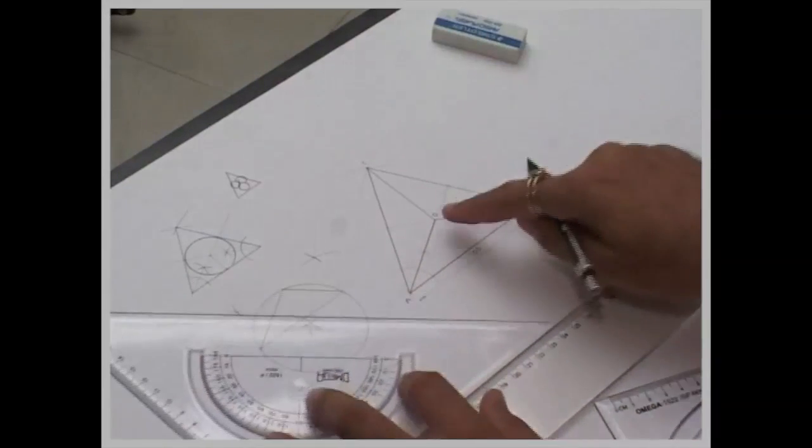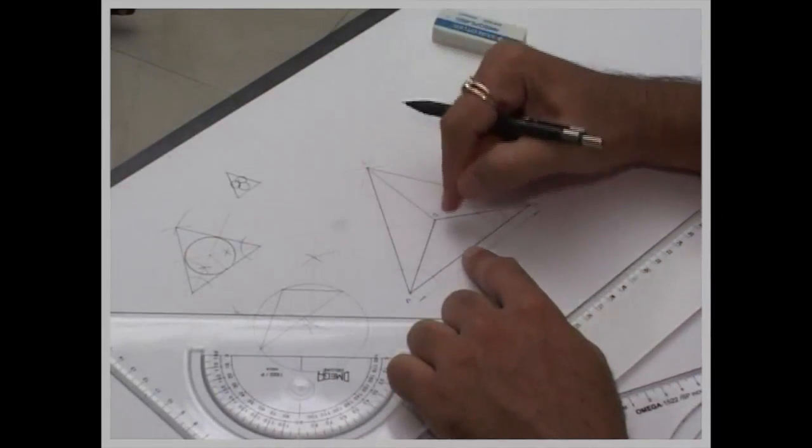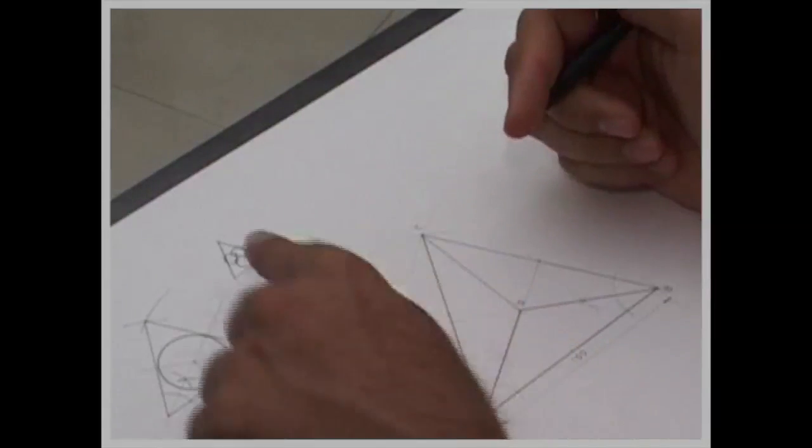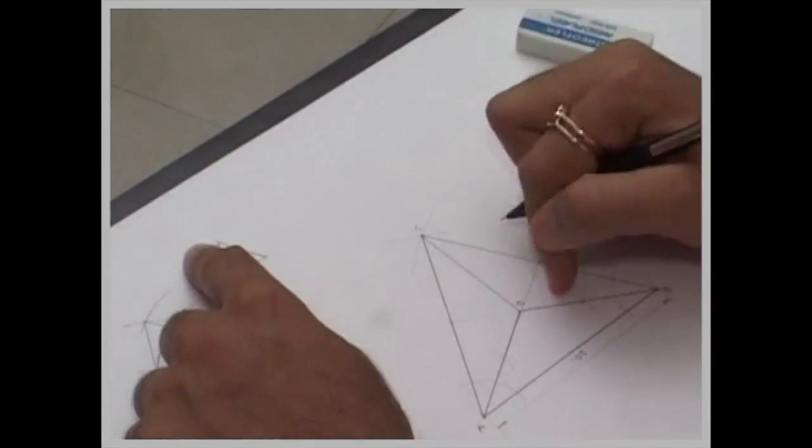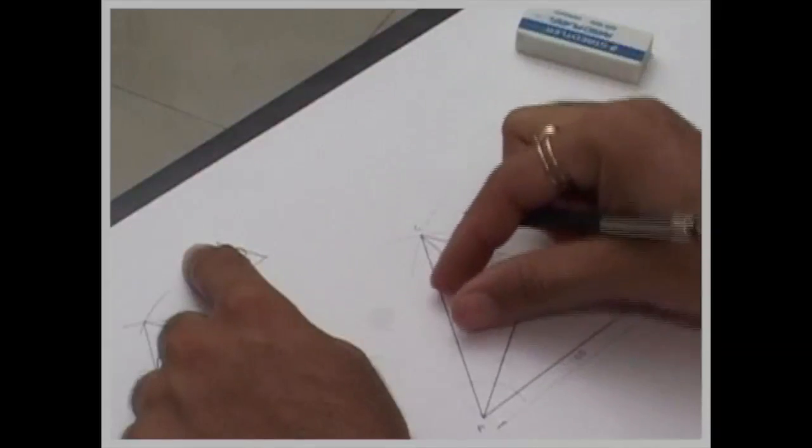See, OAB is one triangle, OBC is another triangle, OCA is another triangle. Now, we have to draw three equal circles inside this triangle, like one circle in this triangle, one circle in this triangle, one circle in this triangle.